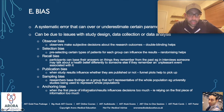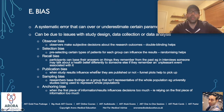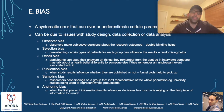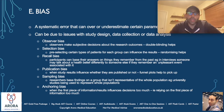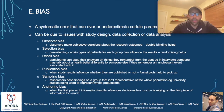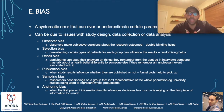Sampling bias: researchers base findings on a group that isn't representative of the whole population. For example, if you're trialing a new drug for rheumatoid arthritis and your sample is only people aged 18 to 20, and you try to use that small sample to represent the whole population, you may end up with sampling bias because the sample isn't big enough, wide enough, or representative enough. Ideally, you'd want patients across all age groups to reduce sampling bias. This is all about sample size, type, or nature.